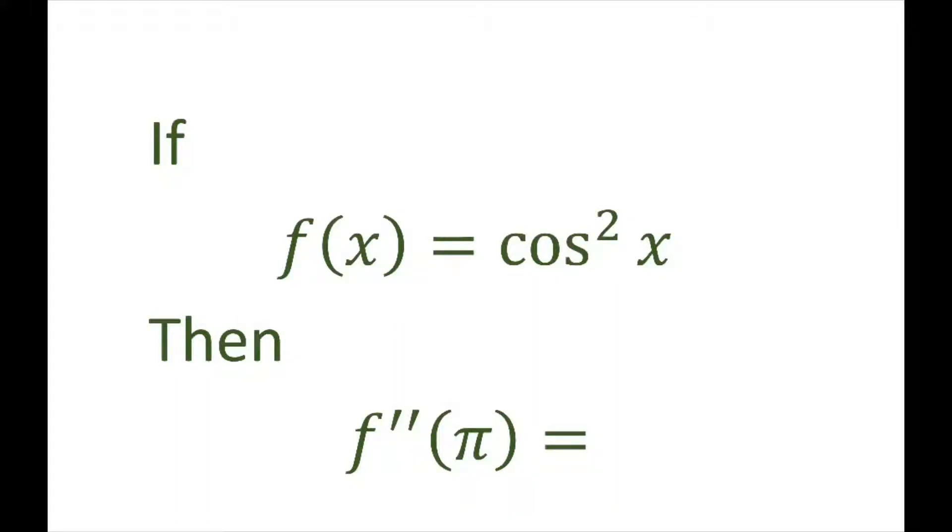Hi everyone. We're going to find the derivative, the second derivative of cosine squared x. So this problem is just asking us to find a higher order derivative of a trigonometric function.